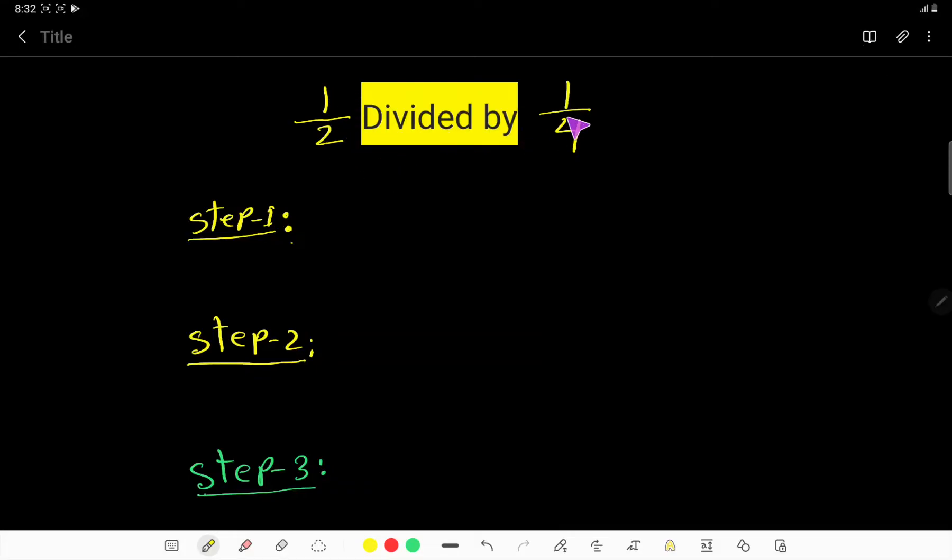1 over 2 divided by 1 over 4. So in the first step, I will just express this. I will just translate this expression, so divided by means division sign.